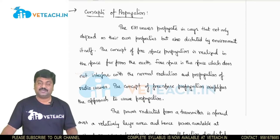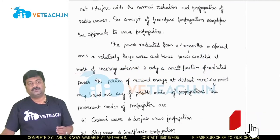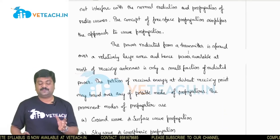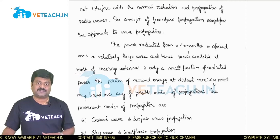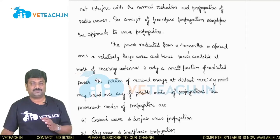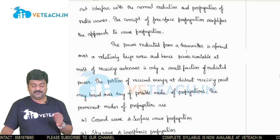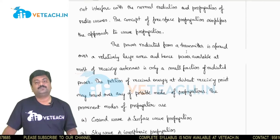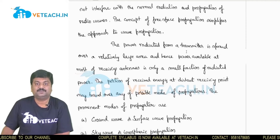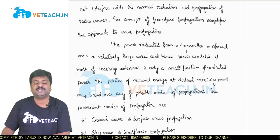The concept of free space propagation always simplifies the approach of waves that are being propagated. The main thing we need to consider is that all the transmitted power should be available at the receiving end. But in most cases, due to abnormalities in environmental conditions, we will be missing out some small portion of the transmitted power.